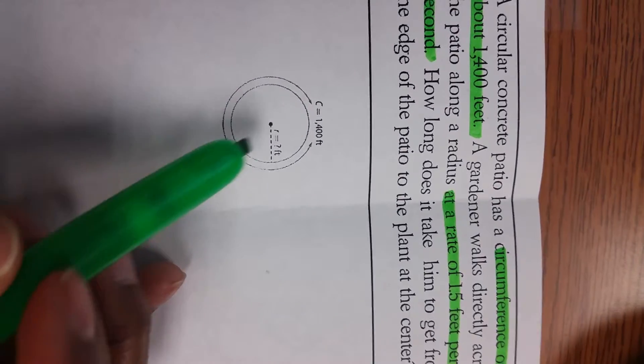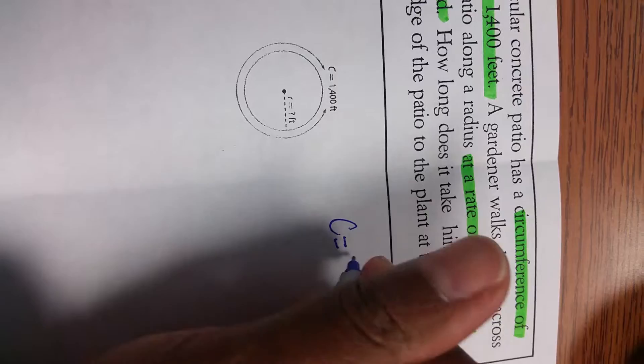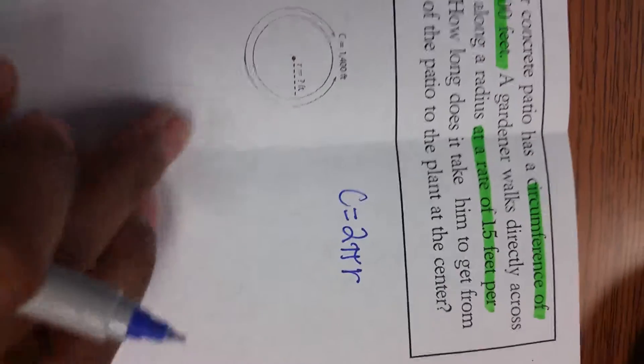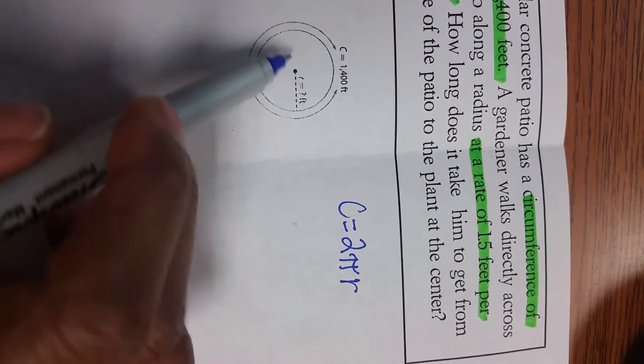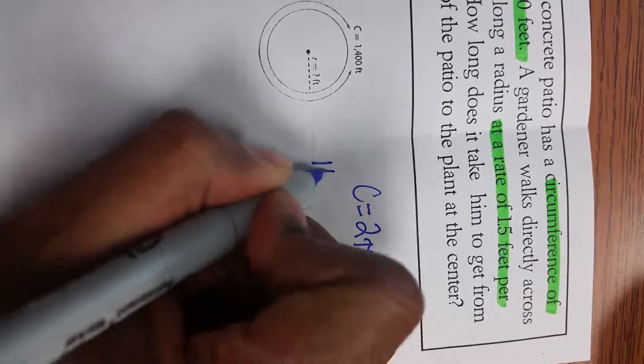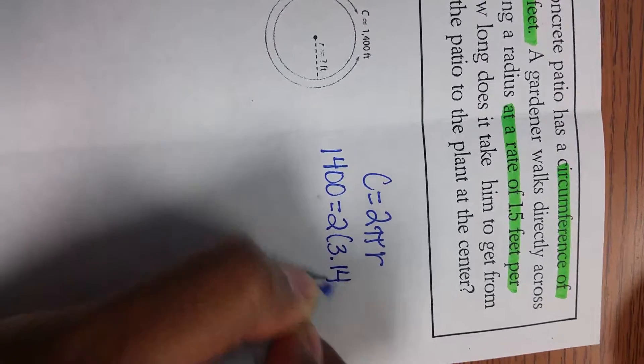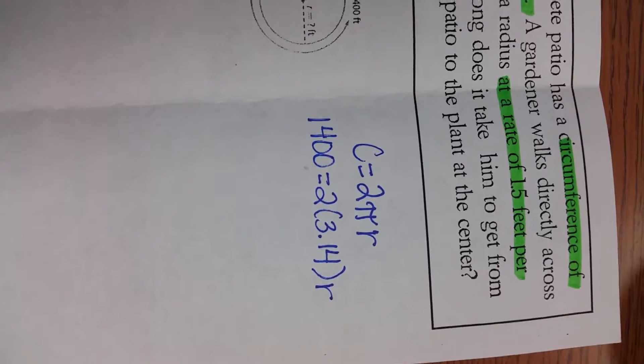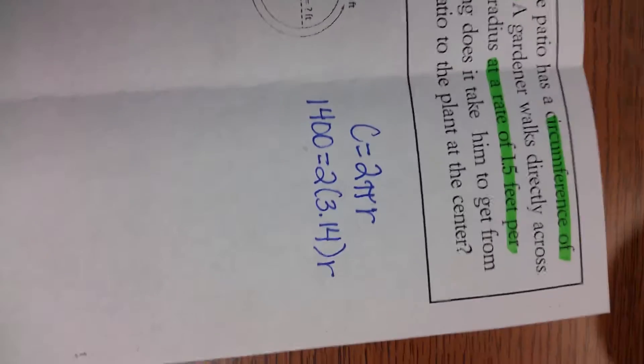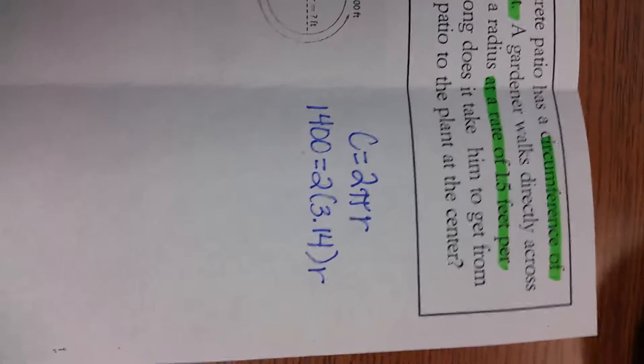So now, we're missing the radius here. We have the circumference, but we're going to actually use that formula, c equals 2 times pi times radius. All we're going to do is plug our numbers, plug whatever we have in, in our formula. We have our circumference, so it'll be 1,400 equals 2 times 3.14 times r, because we don't know what the radius is. Now, this should look familiar simply because it's an equation now. This is going to become an equation, a one-step equation.